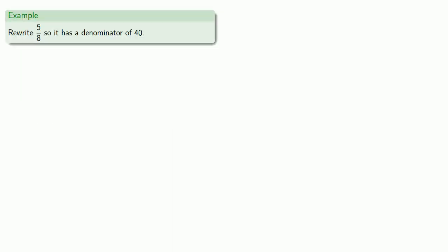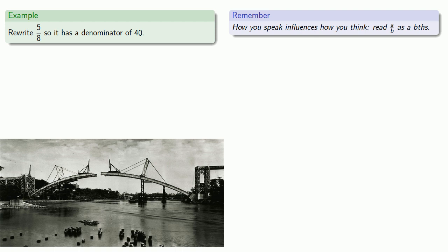For example, write 5 over 8, I mean 5 eighths, so it has a denominator of 40. In many cases, mathematics is like building a bridge. We can start at the ends and work towards the middle.